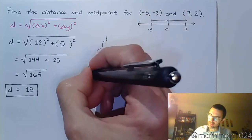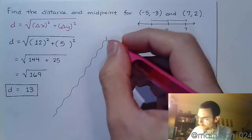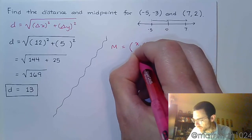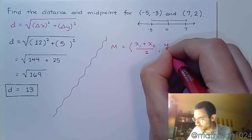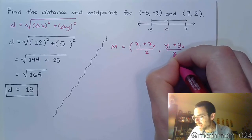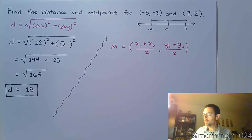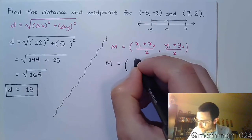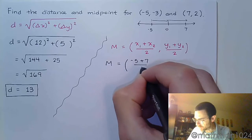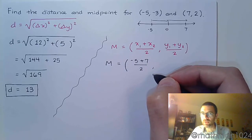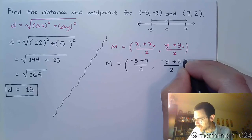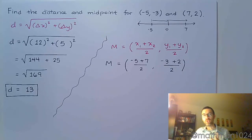Now what about the midpoint? The midpoint is really the easier of the two to work out. For the midpoint, you add the x-coordinates and divide by 2, and you add the y-coordinates and divide by 2 as well, because the midpoint is the average of the x's and the average of the y's. Make sure you put your x's together and your y's together, copying from those ordered pairs correctly.